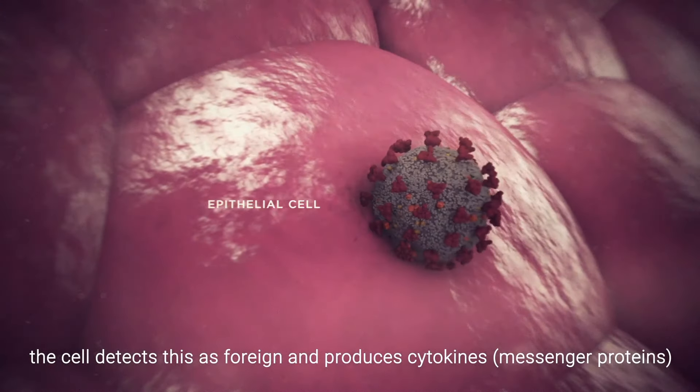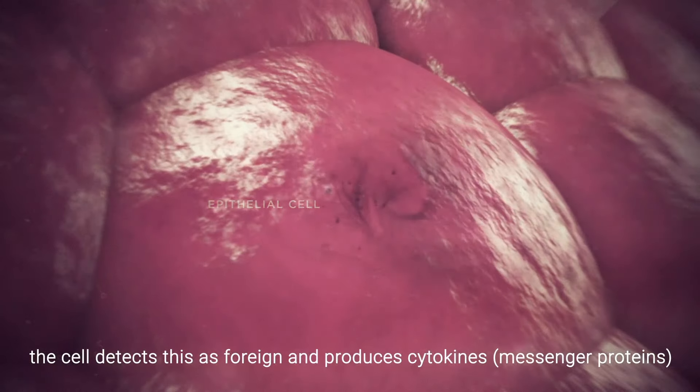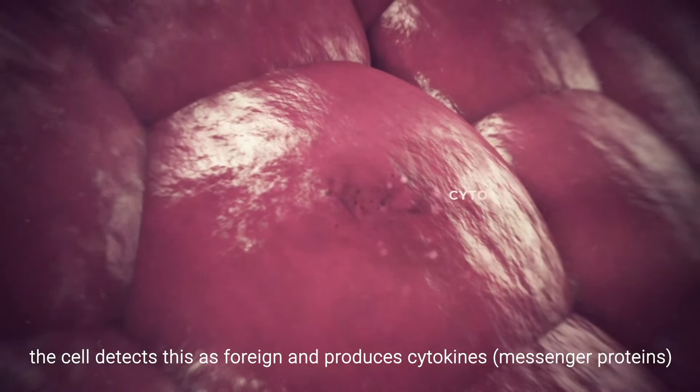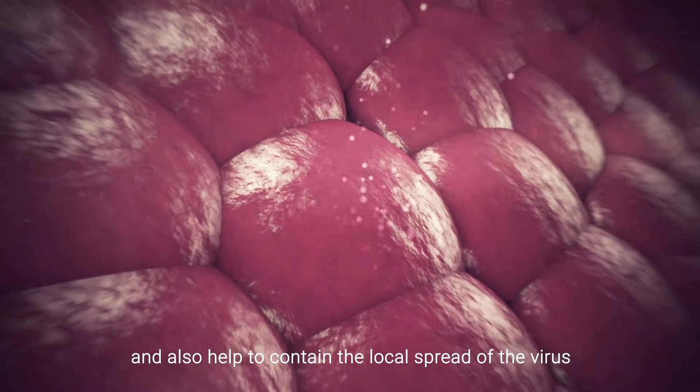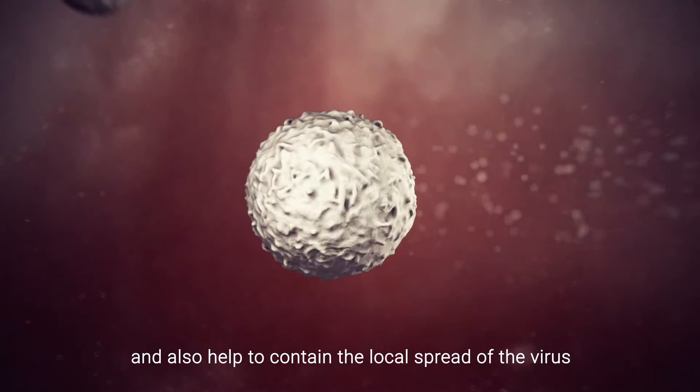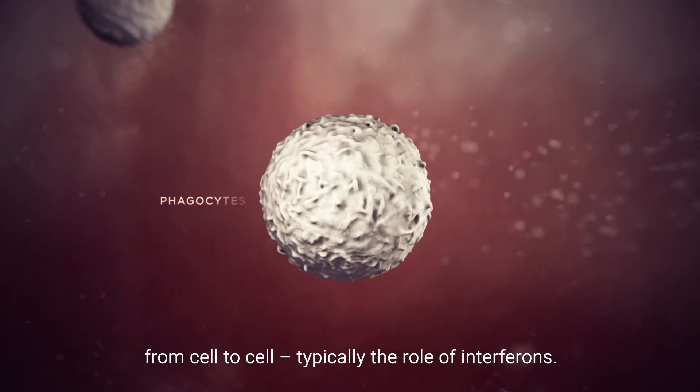The cell detects this as foreign and produces cytokines, messenger proteins, to summon help via phagocytes, a type of white blood cell, and also help to contain the local spread of the virus from cell to cell, typically the role of interferons.